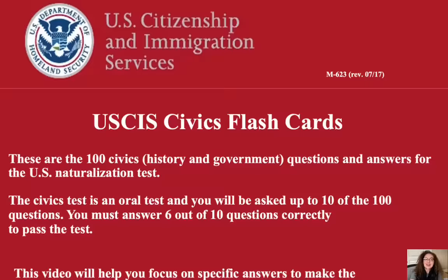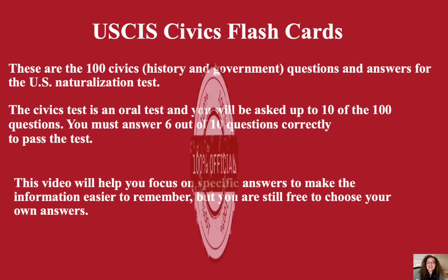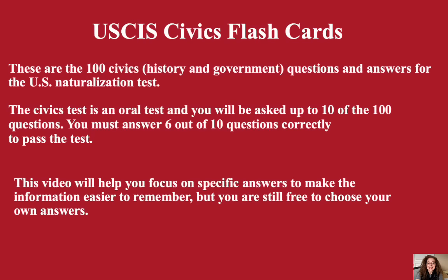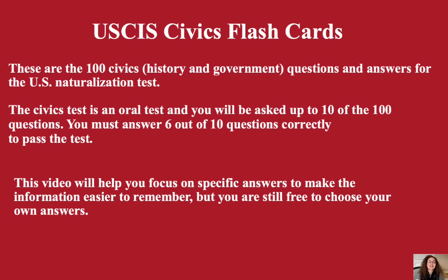Let's see how you do. Instructions first. These are the 100 official civics questions, also known as the 2008 version from USCIS. You will be asked 10 randomly chosen questions. You must get 6 of those 10 correct in order to pass. Please know that this is an oral test, so there's no multiple choice here. And remember, you only need to provide one answer unless the question specifically asks for more than one.